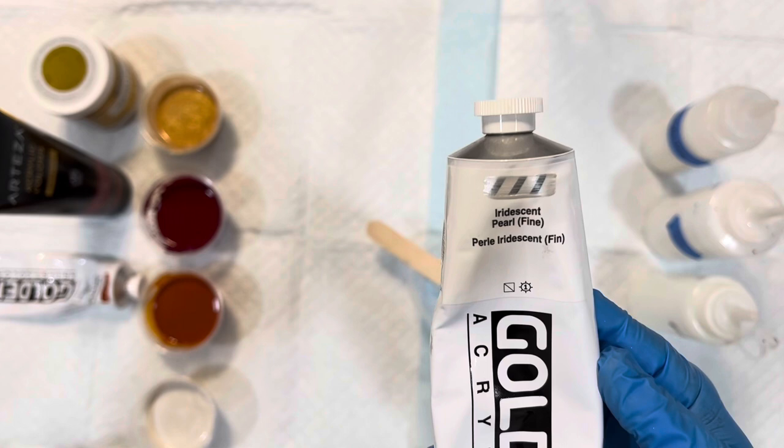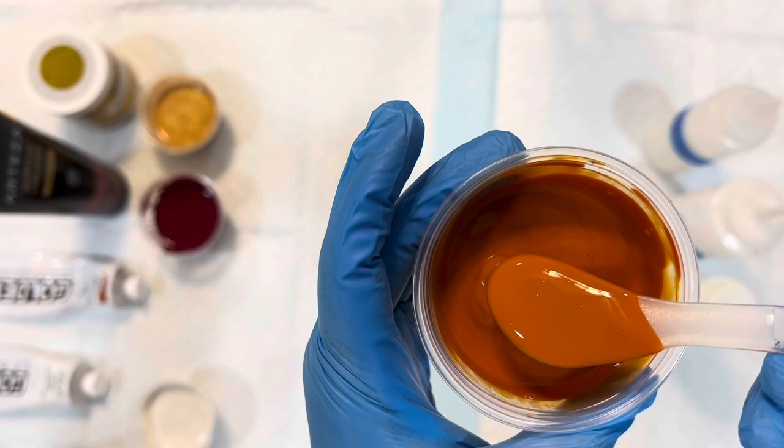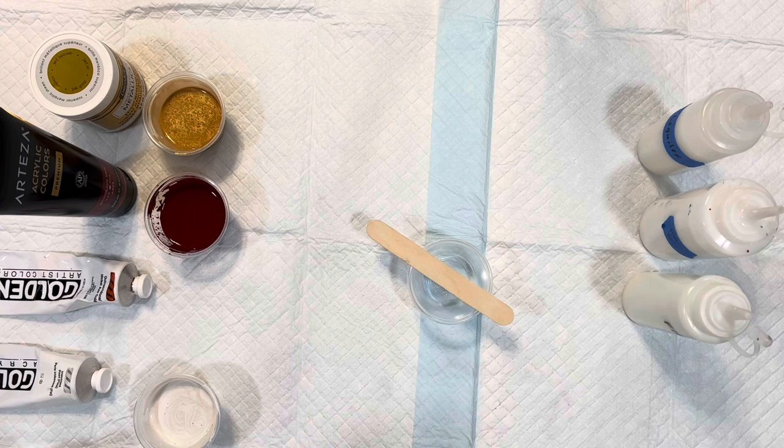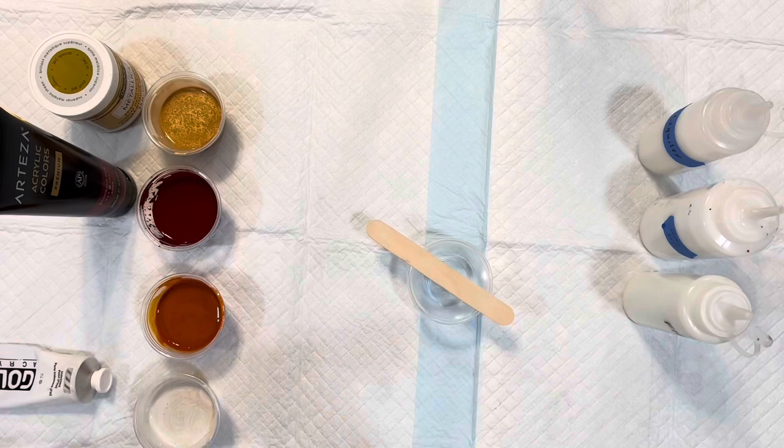So I wanted to show you my colors real quick. I'm starting out with Golden Iridescent Pearl Fine, and then we're moving on to also Golden, the Q word, Quinacridone Nickel Azo Gold or QNAG. That color is just so versatile depending on what you put it next to. It is a gorgeous color. If you haven't tried it, try it out in your next painting. You're going to fall in love with it.